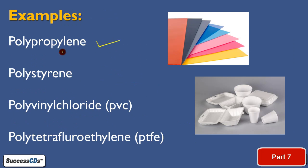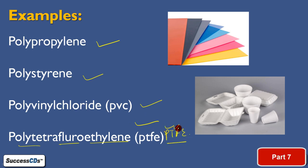Examples of thermoplastics include polypropylene — heat it and no change occurs, you can mold it again and again. We also have polystyrene, PVC (polyvinyl chloride) — from which PVC pipes are made — and PTFE (polytetrafluoroethylene). From these you can make wire covers, disposable items used for drinking or packing. All these are thermoplastics — when heated, no change in chemical composition, and they can be molded again and again.